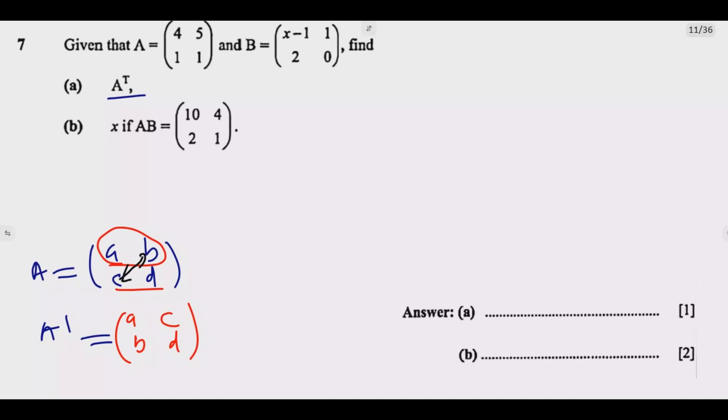Based on that principle, we can say A transpose equals 4, 1, 5, 1 like this. So we are swapping 5 and 1, as simple as that. Then you get that one mark.